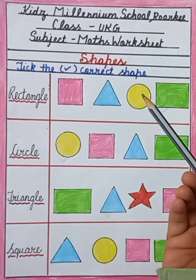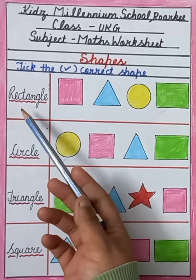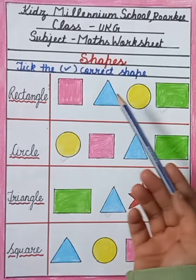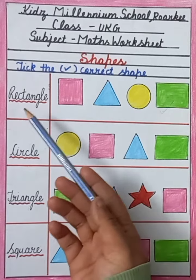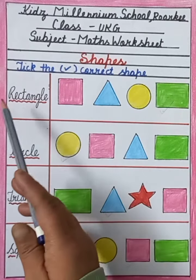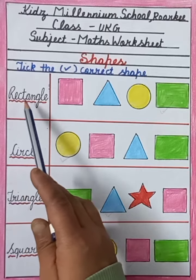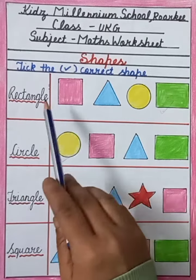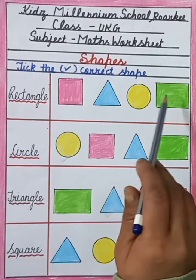So my dear kids, today we will read the name and we will tick the correct shape according to the given name. As you can see, here is rectangle. So we will tick the correct shape.